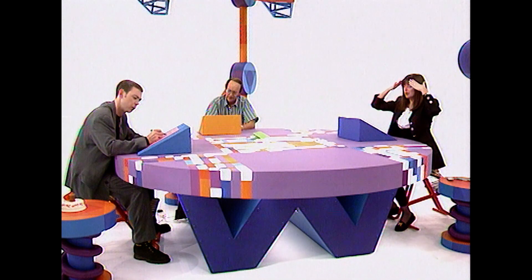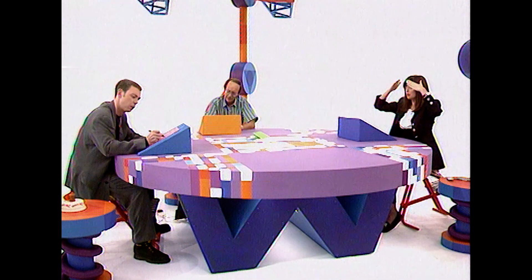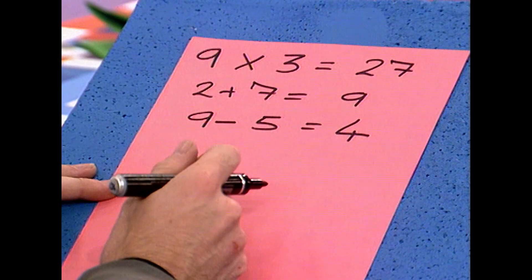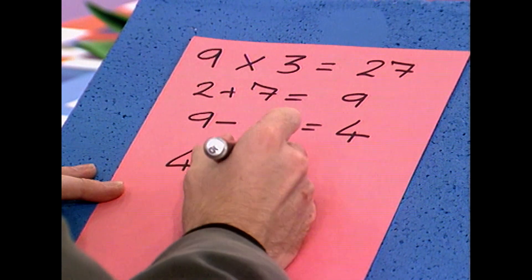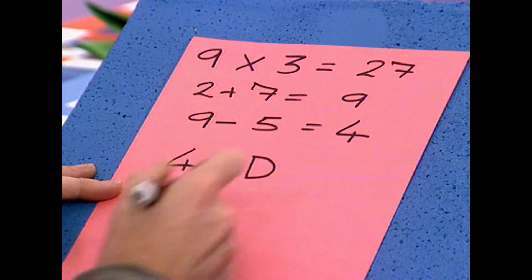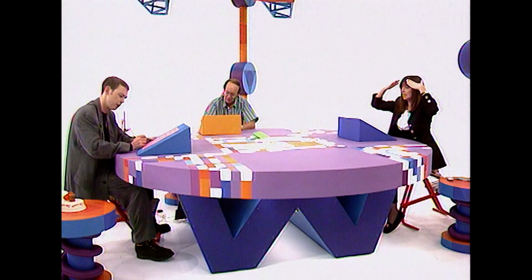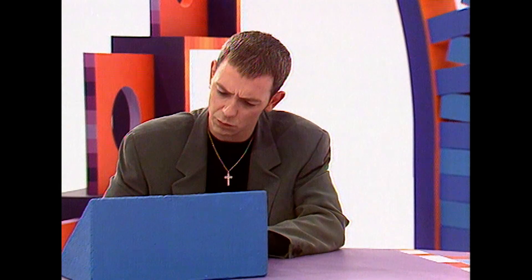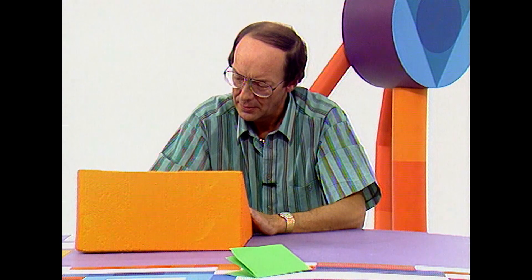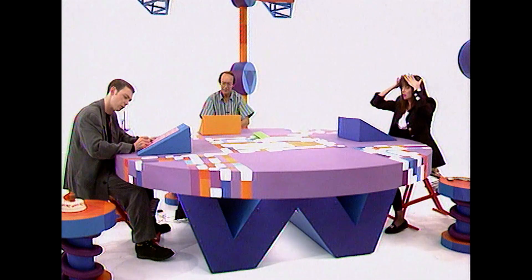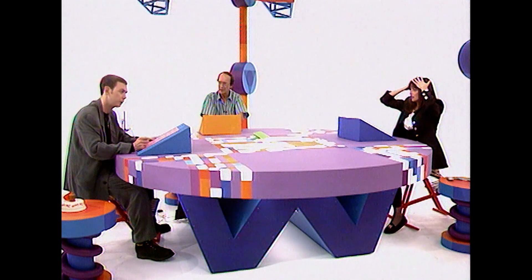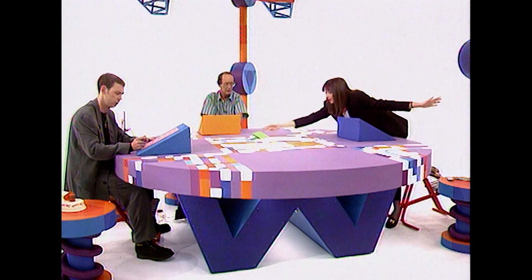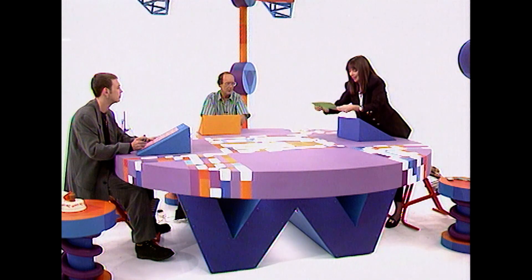Now then, as with A, B, C, we have 1, 2, 3. If the number is 1, write down A. If it's 2, write B. If it's 3, write C. If it's 4, write D. If it's 5, write E. Write that letter down. Now quickly, write a country beginning with that letter. Write it down. Quickly. Concentrate. Freddie, what's your country? Denmark.